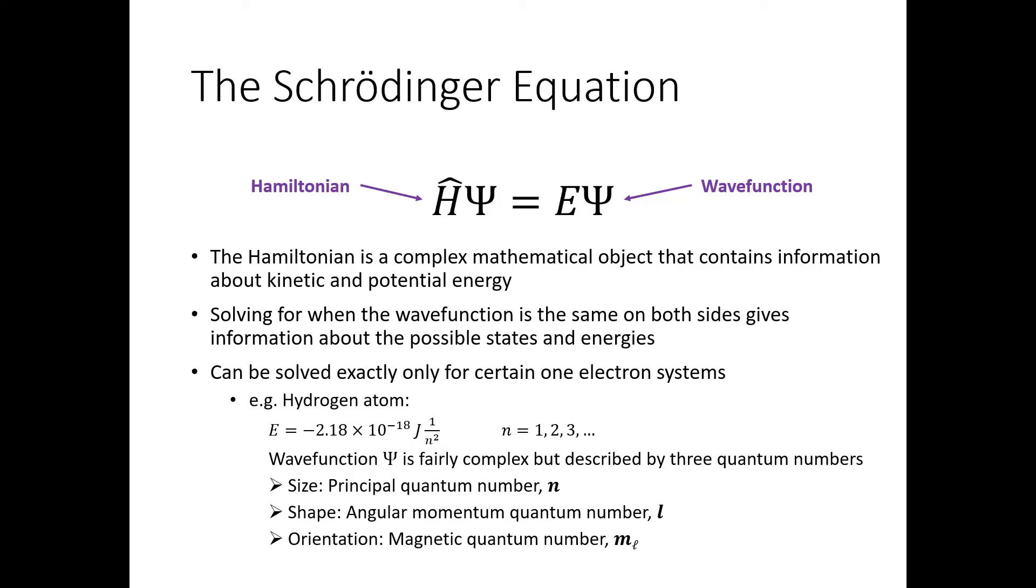So before we get to the approximate solutions though, I want to remind you a little bit about the exactly solvable model, which is the hydrogen atom. So when you solve the Schrödinger equation for the hydrogen atom, you actually get a lot of different solutions out. The lowest energy solution is what's known as the ground state, and higher energy solutions are going to be the excited states. So we know from experiment that the hydrogen atom energy levels are proportional to 1 over n squared, where n is an integer. And these are negative values. So the lowest energy solution is going to be when n equals 1, and then they get less negative as n gets larger.